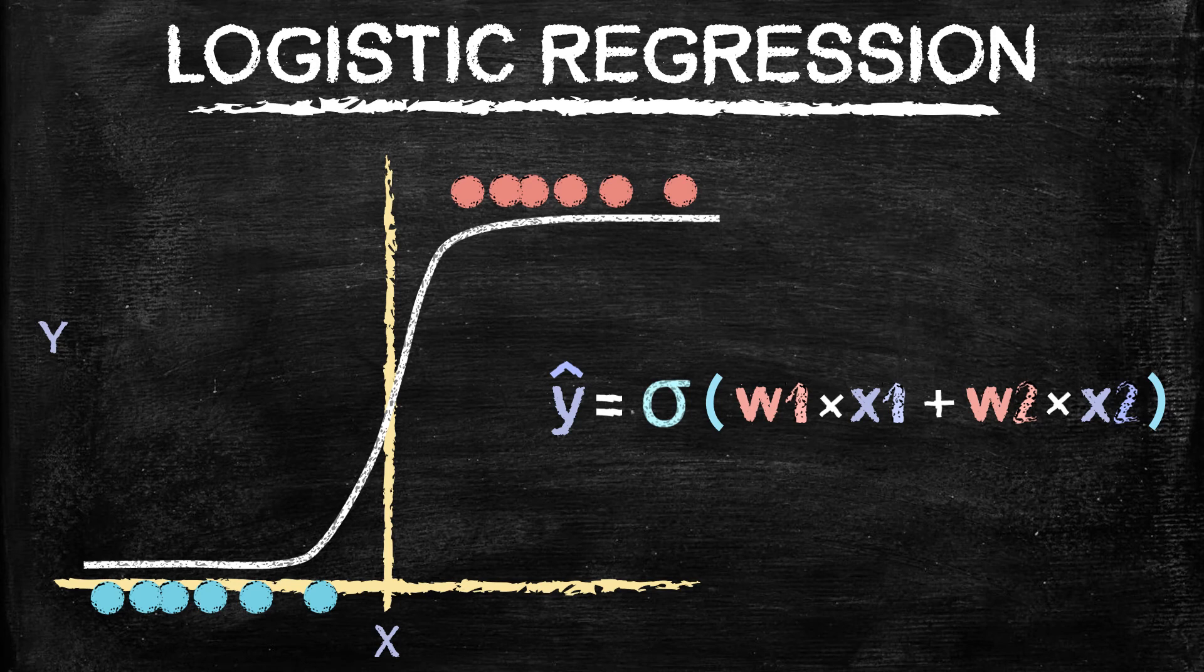And that's all logistic regression is. Now again, the name, or the regression in the name logistic regression is a little misleading because it's not linear regression. It's not predicting continuous lines.